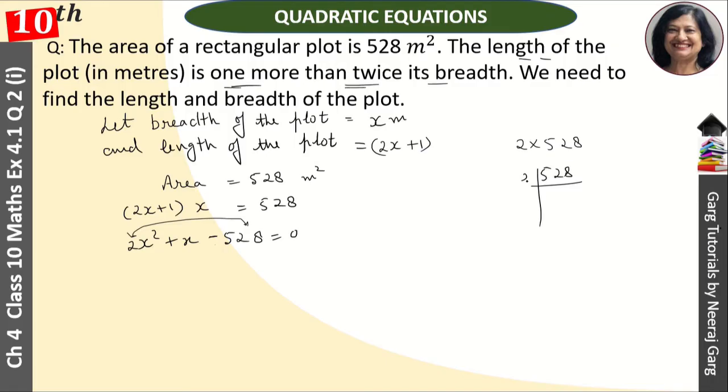We will make the factors of 528: 2, 2, 2, 2, 33, 3, and 11. These are our factors.